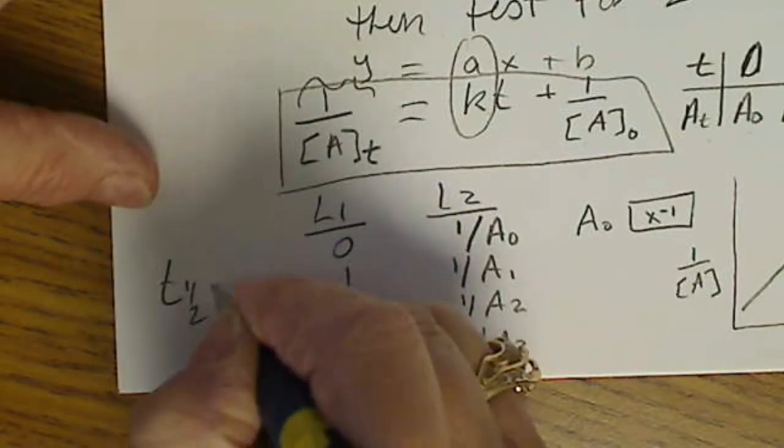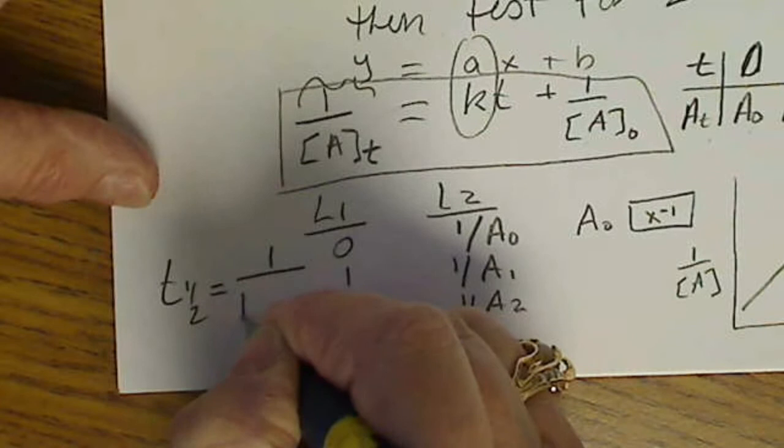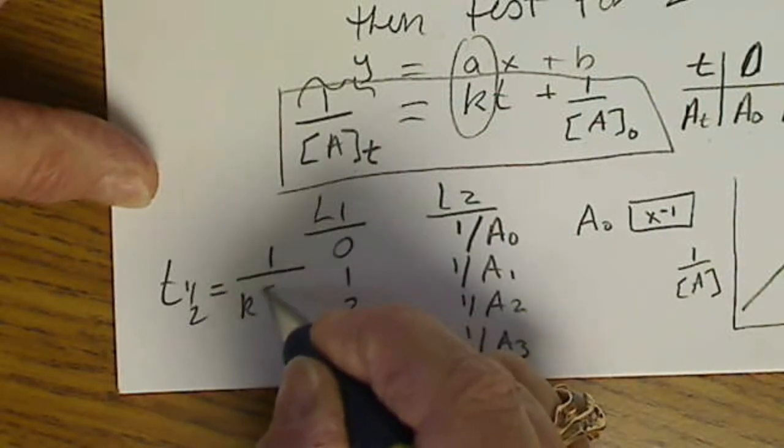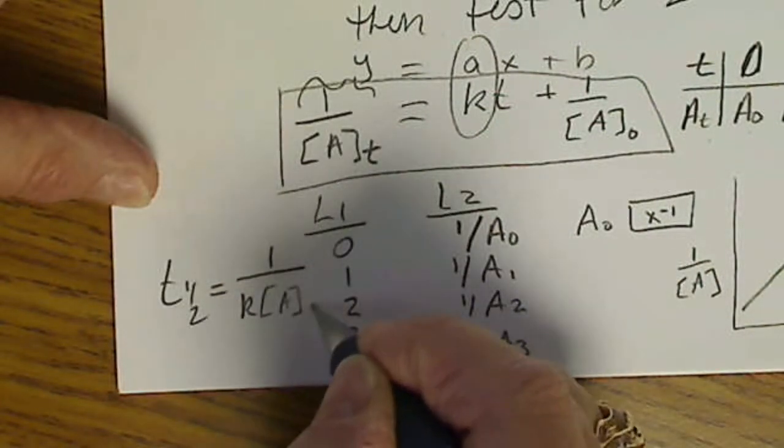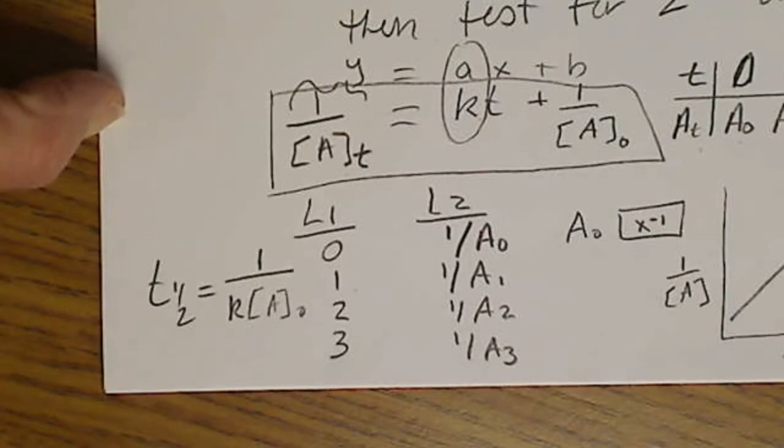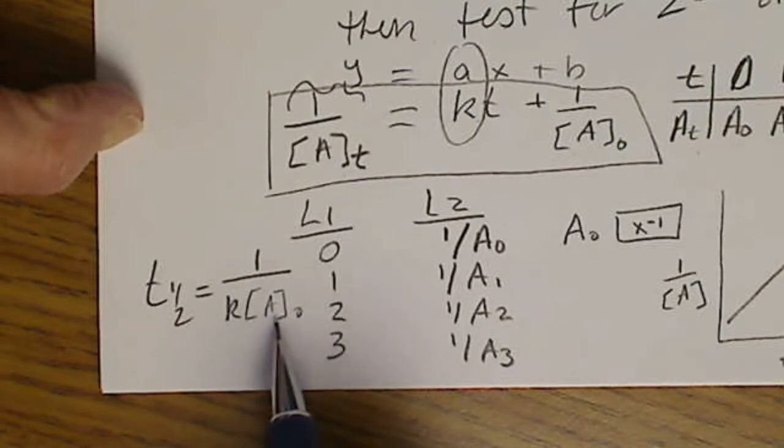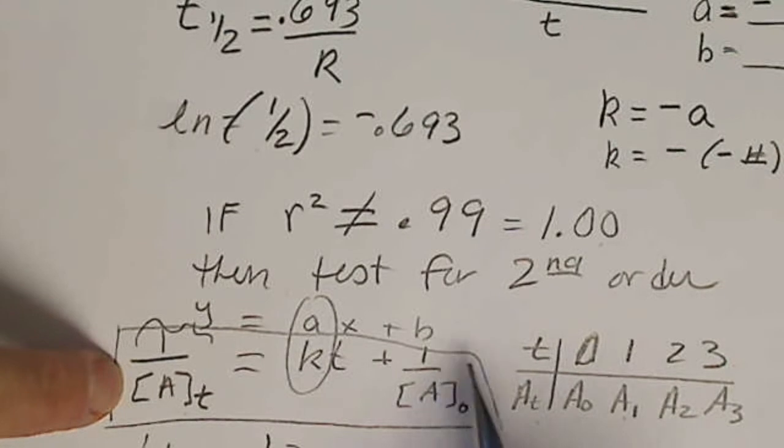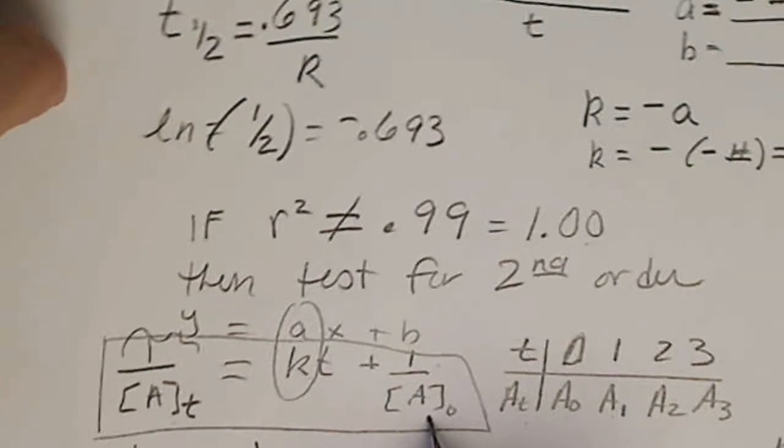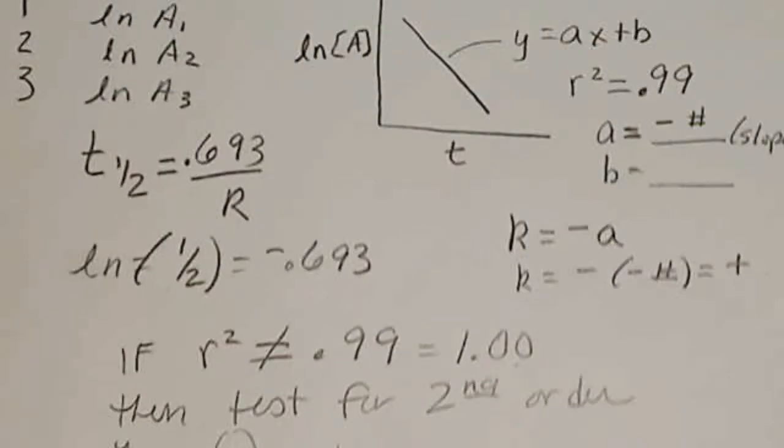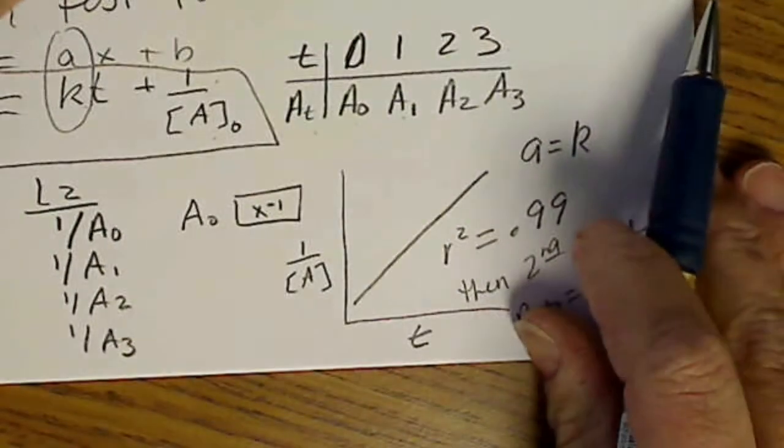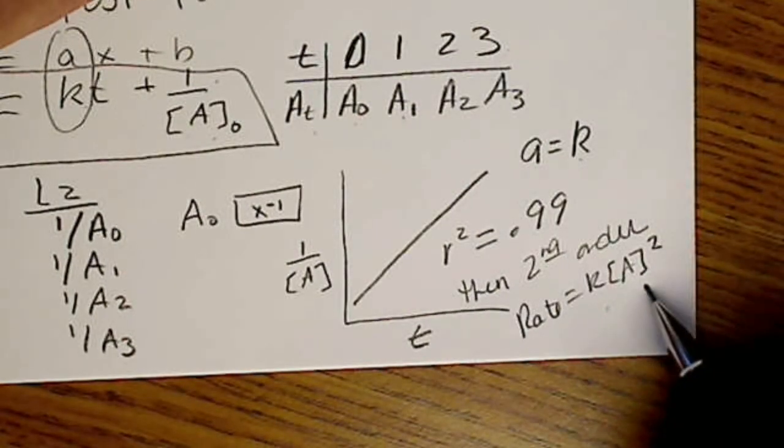And our half-life, I'll stick over here, T1 half would be 1 over the rate constant times the initial concentration. So this half-life, 1 over A, goes with this equation, 1 over A. And that always comes from the second order rate law, which would have this form.